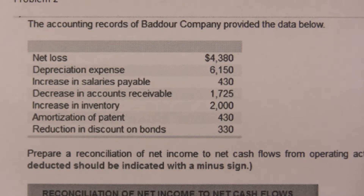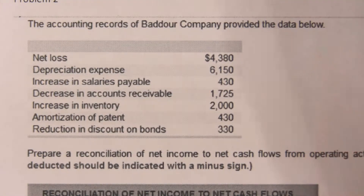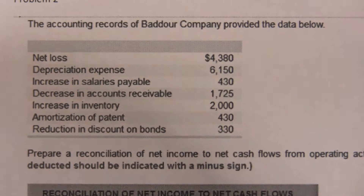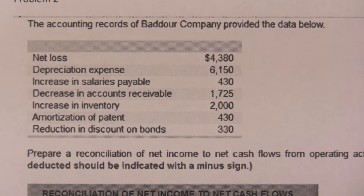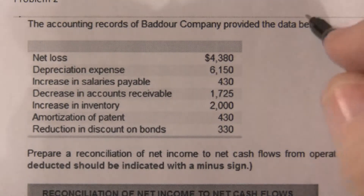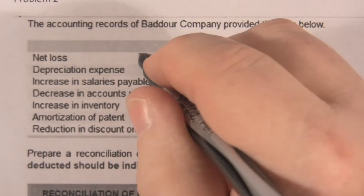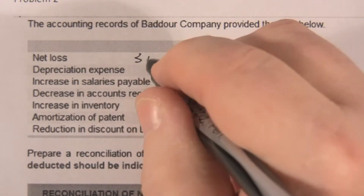Here they're giving us some accounting data and it says prepare a statement of net income and prepare a statement of net cash flows from operating income based on this information. So let's just go through and we start with that.